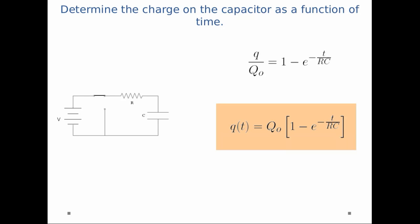And finally, I can multiply each side by Q0 in order to get q as a function of time equals Q0 times 1 minus e to the negative t over RC. You'll notice most of this video was just doing the math. The physics, the actual Kirchhoff's laws occurred on the very, very first slide of the analysis itself.